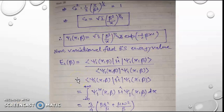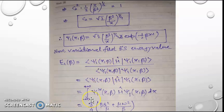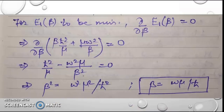The variational first excited state energy is given by the expectation value E₁ as a function of β. Substituting ψ₁ and the Hamiltonian and solving, we get E₁(β) = (3/4)[βℏ²/μ + μω²/β]. For E₁(β) to be minimum, we set ∂E₁(β)/∂β = 0 and solve to get β = μω/ℏ. Incidentally, this is the same as the value of α obtained for the ground state.